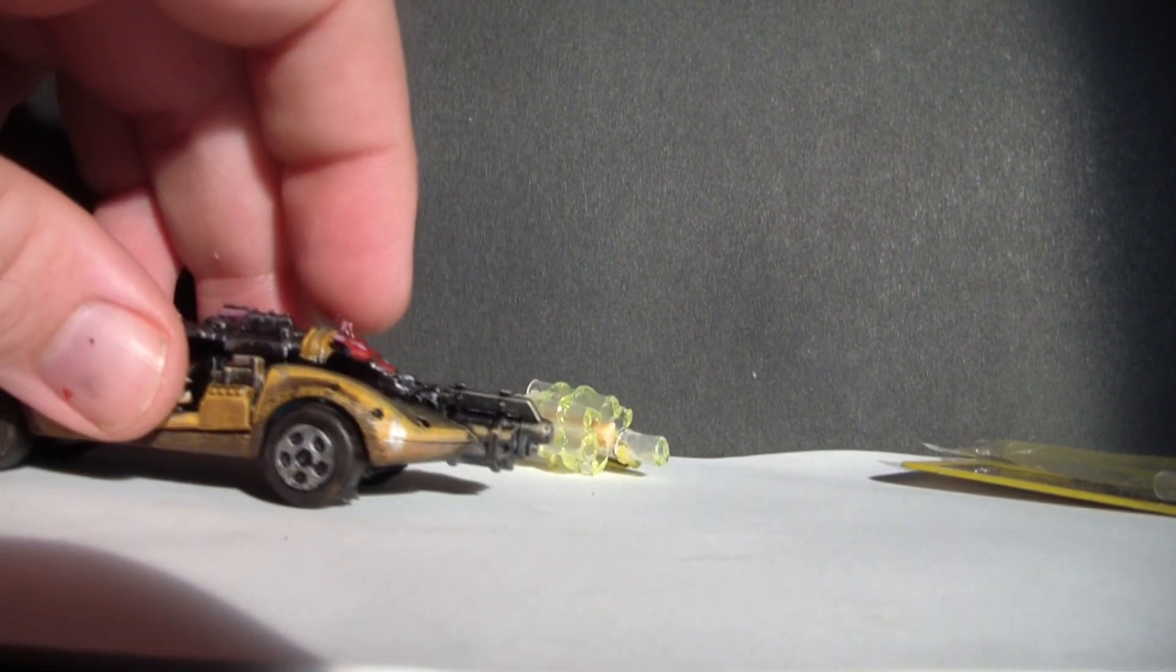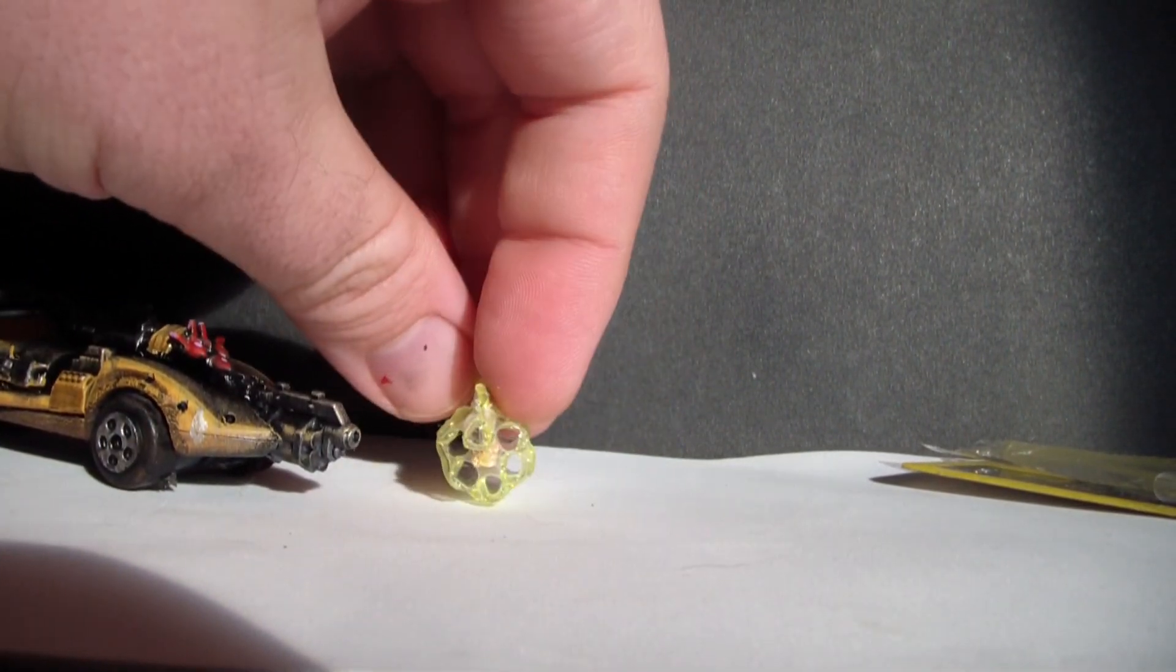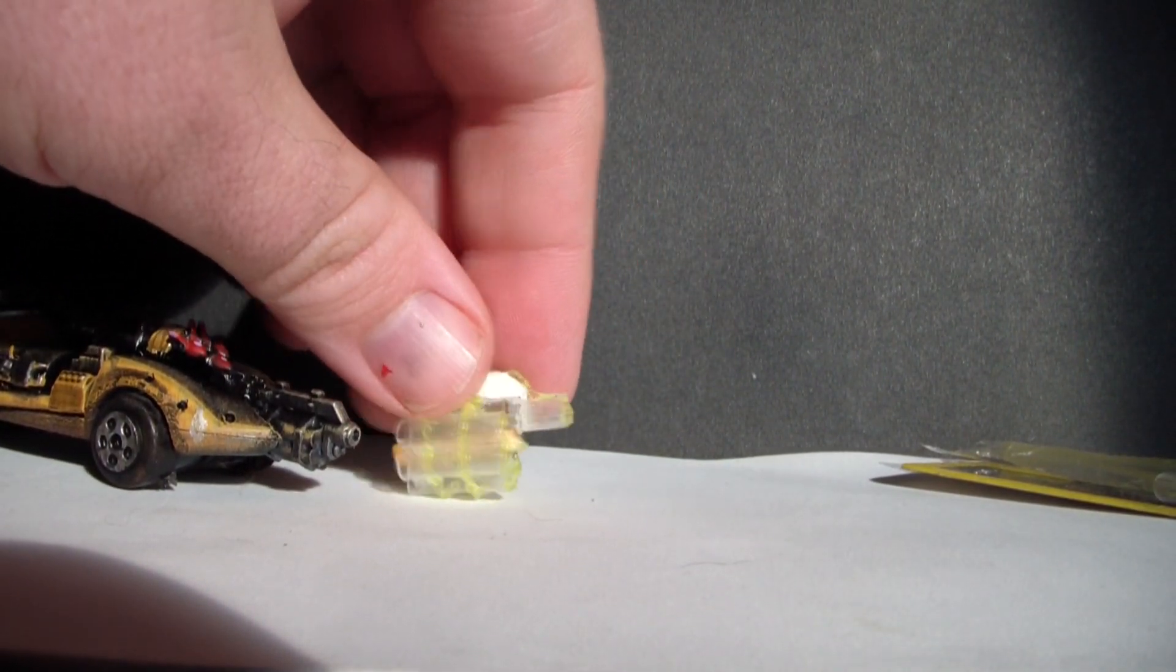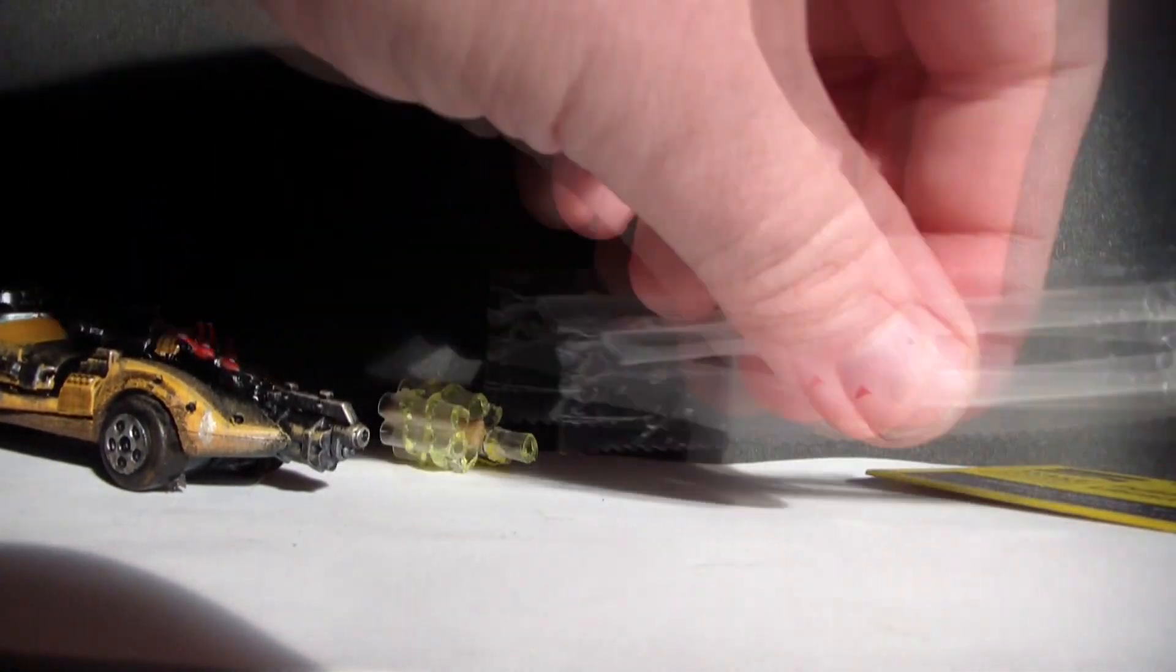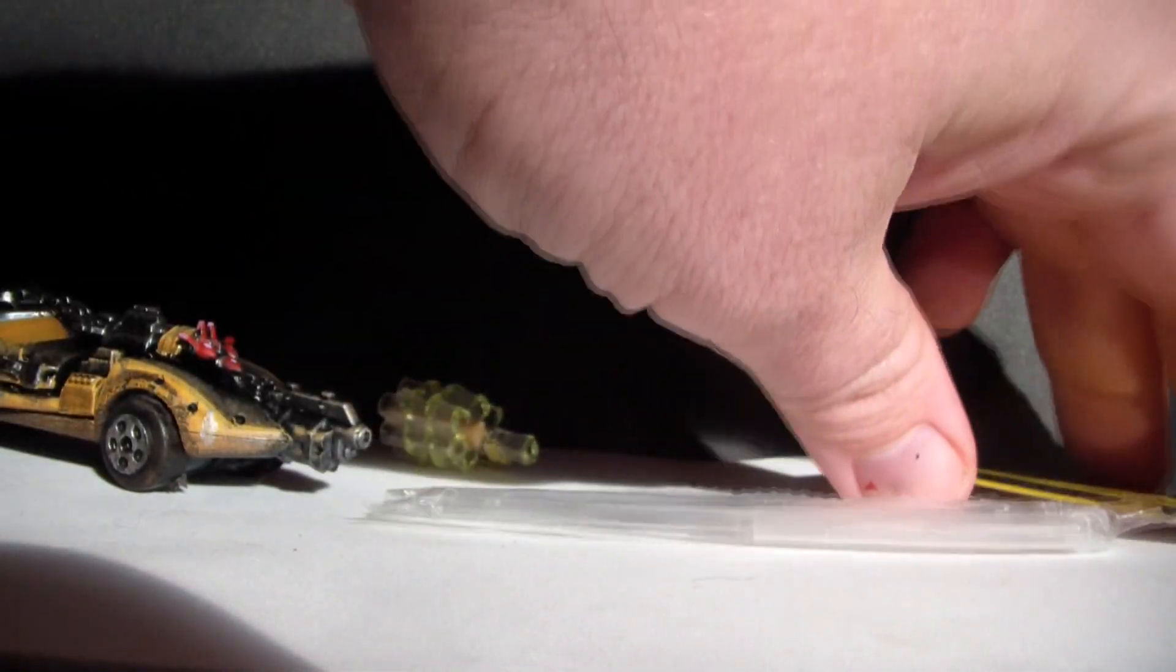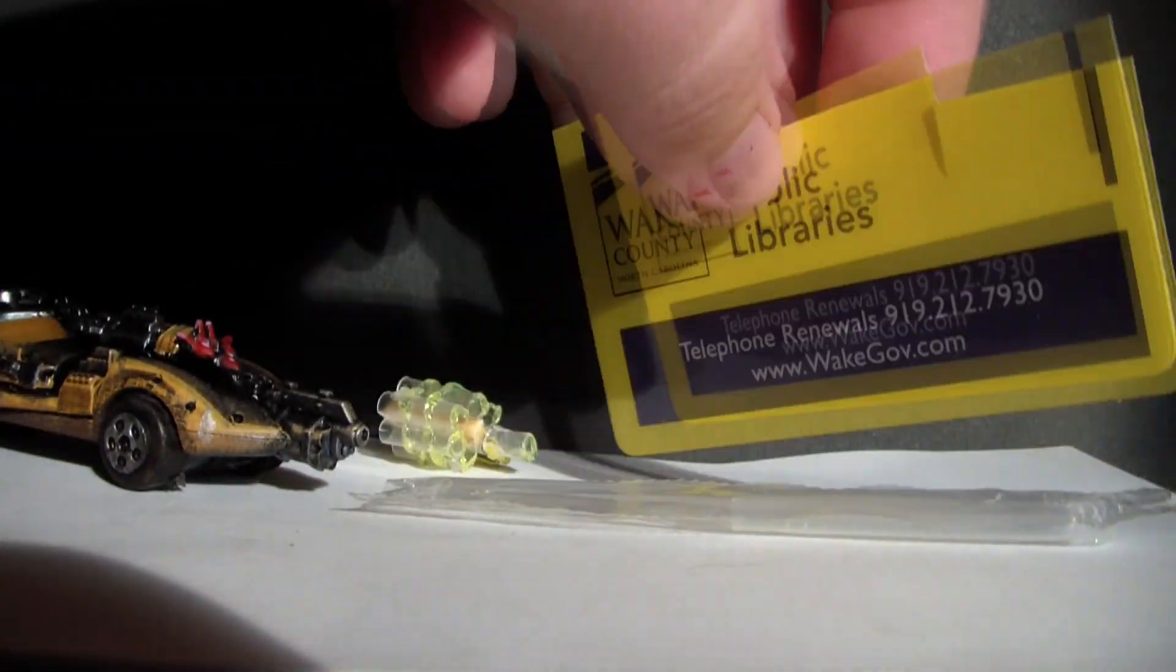This here is a little Happy Meal toy that I converted into a Gaslands racer. See right here at the front, we got a nice little Games Workshop gun. That's what we're gonna try to make today out of some household items.